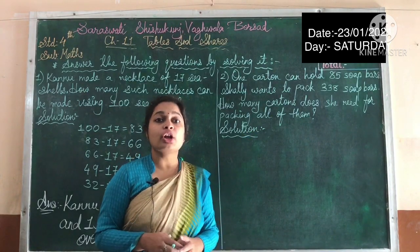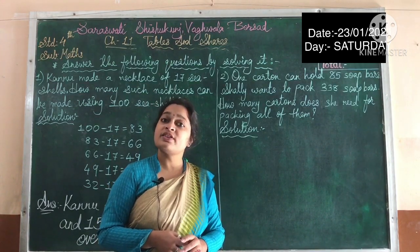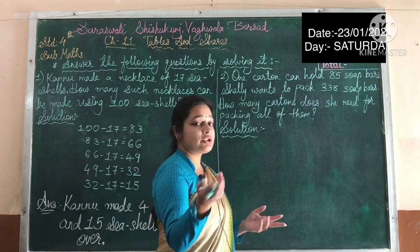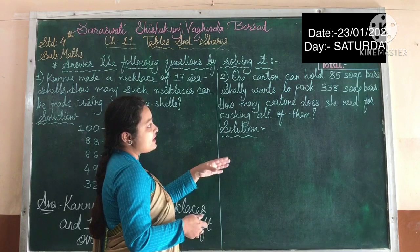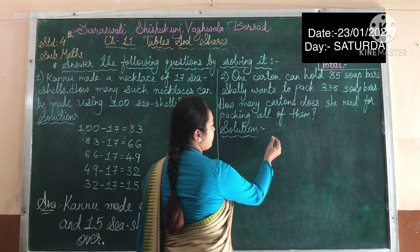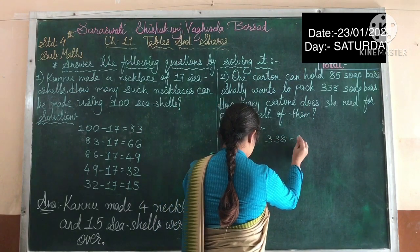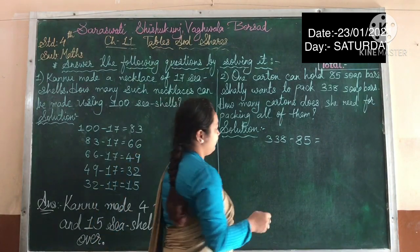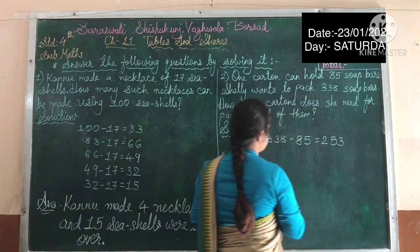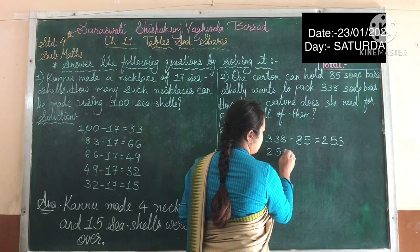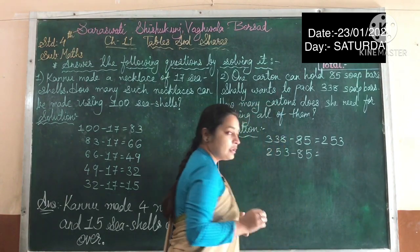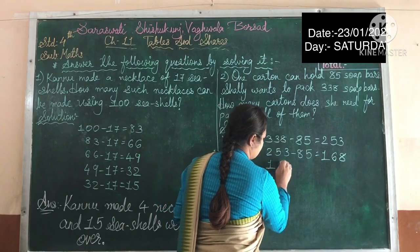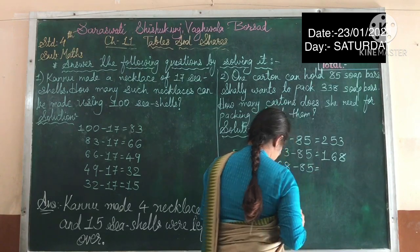How many cartons does she need to pack all those soap bars? For that, again we need to do repeated subtraction. You can use division also if you know that — it's not important to use only repeated subtraction, but repeated subtraction is easy here. So let's solve it: 338 minus 85 equals 253. Take 253, subtract with 85, you get 168. Now take 168, subtract with 85, and you get 83.